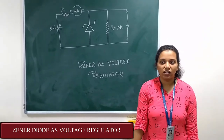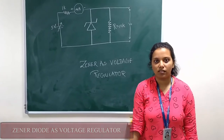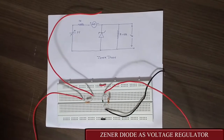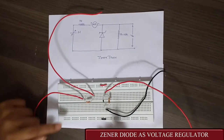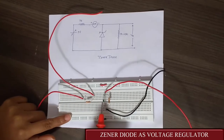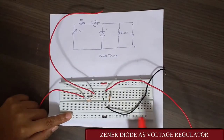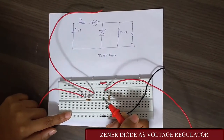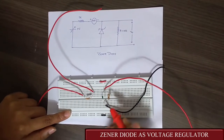Now let's see its breadboard implementation. This is the breadboard implementation of the zener diode. As you can see, this green component here is the zener diode. The black end indicates the negative terminal and the other end is the positive terminal of the zener diode.